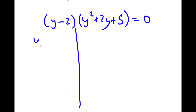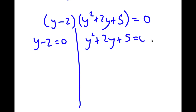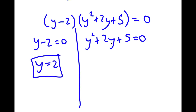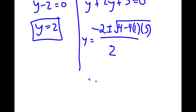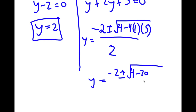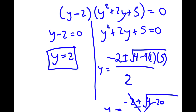This gives me two equations: y minus 2 is equal to 0, and y squared plus 2y plus 5 is equal to 0. For y minus 2 equals 0, I obviously get y equals 2. For y squared plus 2y plus 5 equals 0, using the quadratic formula I get negative 2 plus or minus the square root of 4 minus 20, which is the square root of negative 16. You can't take the square root of a negative number, so my only solution for y is 2.